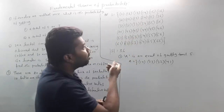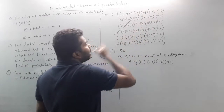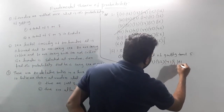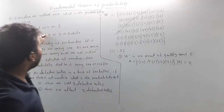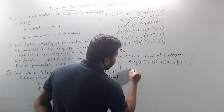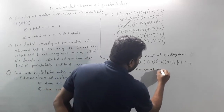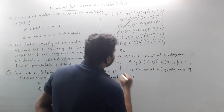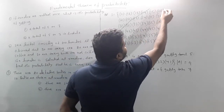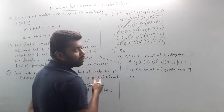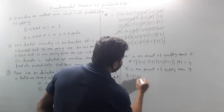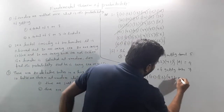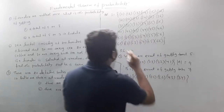Let B be the event of getting a total of 7. The outcomes are: (1,6), (6,1), (2,5), (5,2), (4,3), (3,4). So the number of elements in B is 6.